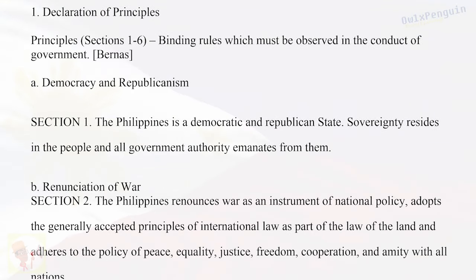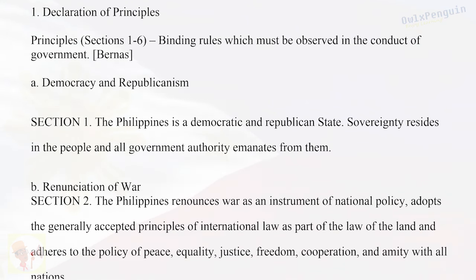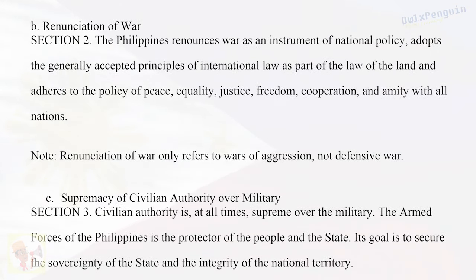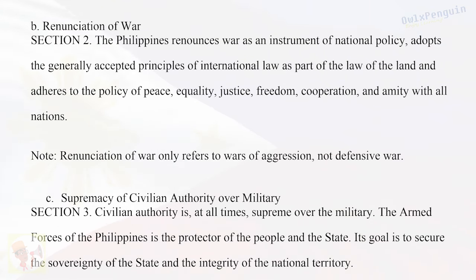Declaration of Principles, Sections 1–6: Binding rules which must be observed in the conduct of government. A. Democracy and Republicanism — Section 1: The Philippines is a democratic and republican state. Sovereignty resides in the people and all government authority emanates from them. B. Renunciation of War — Section 2: The Philippines renounces war as an instrument of national policy, adopts the generally accepted principles of international law as part of the law of the land, and adheres to the policy of peace, equality, justice, freedom, cooperation, and amity with all nations. Note: renunciation of war only refers to wars of aggression, not defensive war.